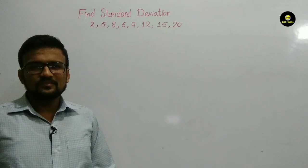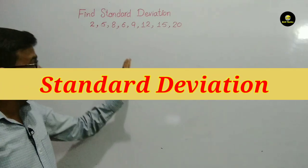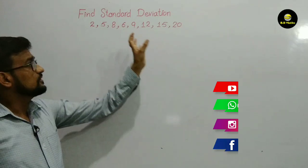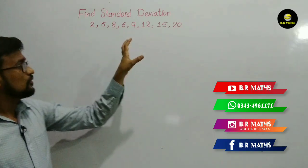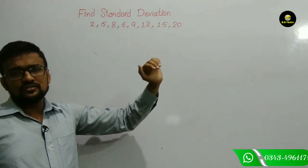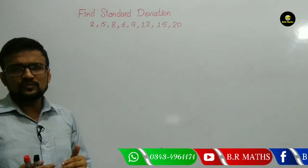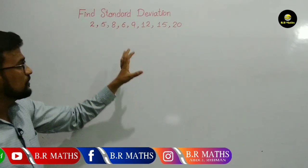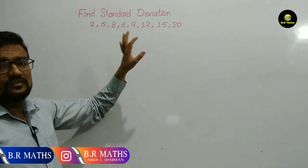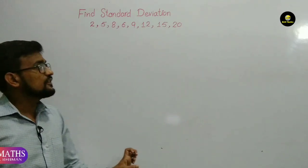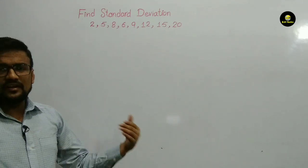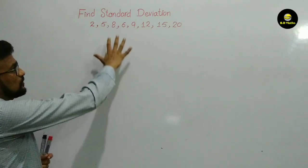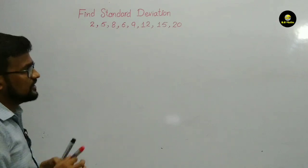Assalamualaikum students, today I will discuss the important concept of finding the standard deviation — it belongs to statistics. This is the most important topic: find the standard deviation. Standard deviation means the variation between observations and data. This is a very simple question. We find the variation, and also variance and range, but the standard deviation is very close to finding the variation between observations.